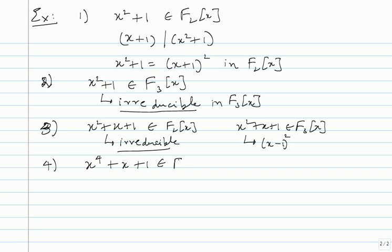From now on let's stick to F2[x]. Start with cubic polynomials: if a cubic is reducible, it must have a linear factor — you cannot escape a linear factor. So it's enough to check for roots. Putting x=0 gives no root; x=1 gives no root; so you can conclude it's irreducible.